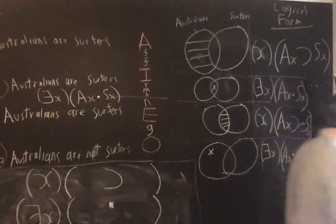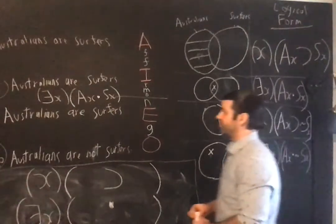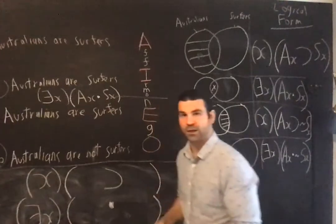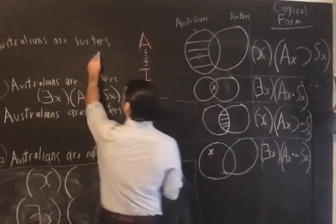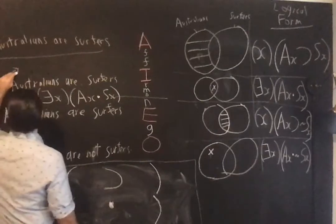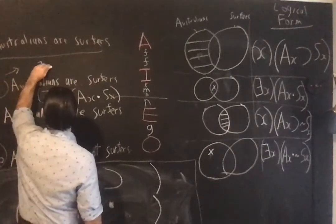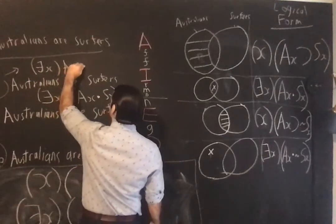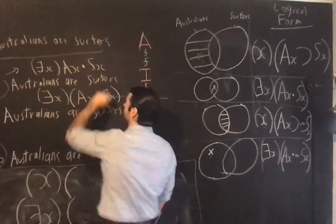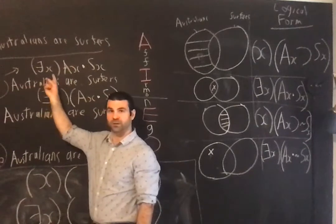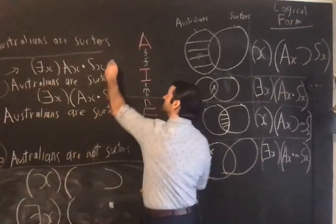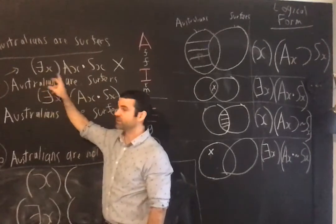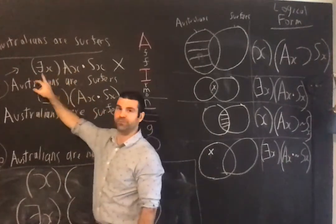She goes on to explain how wrong it is to not have the brackets. If you were to try to have something like this, as she explains, this says something weird. Here, this is going wrong. What does this say? This is the scope of this quantifier.